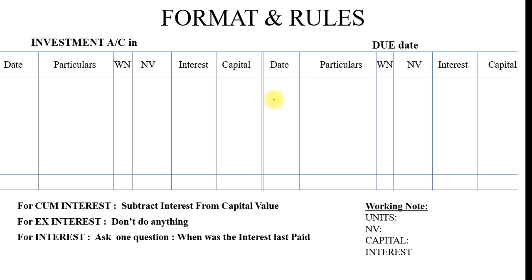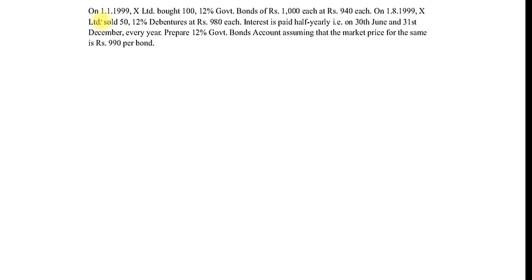So let us start with the solving part. On 1st January 1999, X Limited bought 100 12% government bonds of Rs. 1,000 each at Rs. 940 each. On 1st August 1999, X Limited sold 50 12% government bonds at Rs. 980 each. Interest is paid half-yearly on 30th June and 31st December every year.